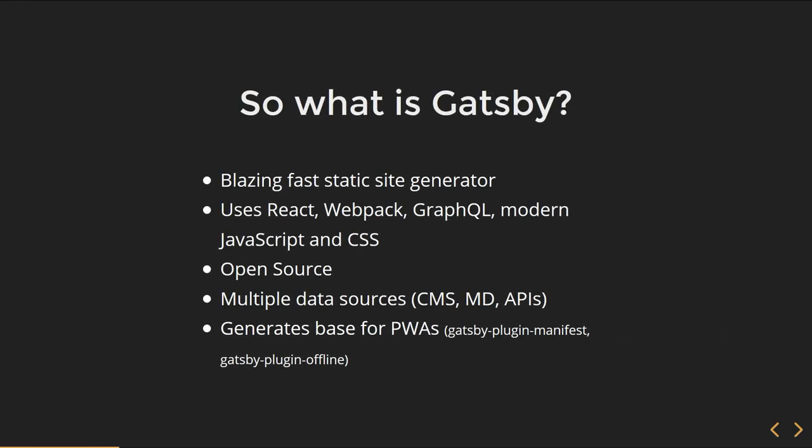What is Gatsby? Gatsby is a blazing fast static site generator. It uses React and LeaBoot, Webpack, GraphQL, modern JavaScript and CSS. It's open source, it's written on Node.js. You can fetch data from multiple data sources, and it generates a good base for progressive web apps using these mentioned plugins. Interesting fact: the React website is actually built with Gatsby.